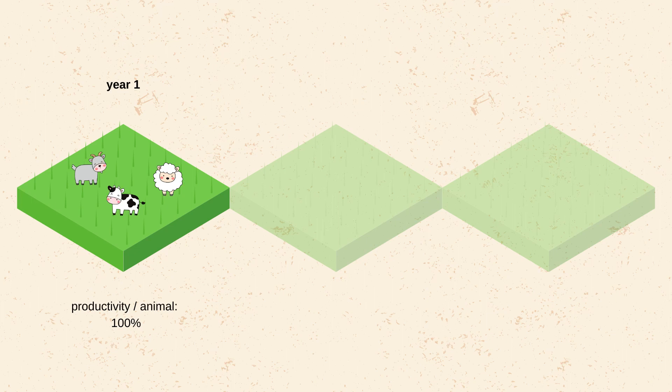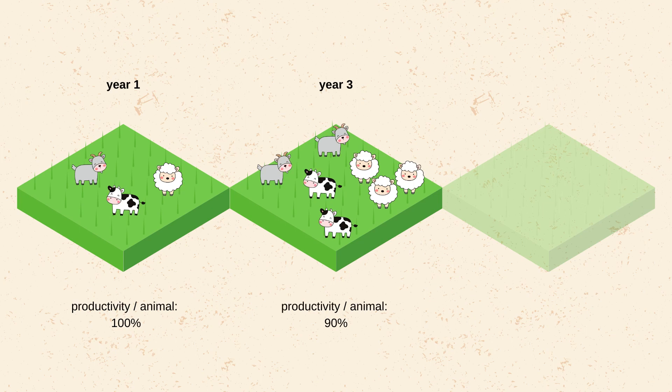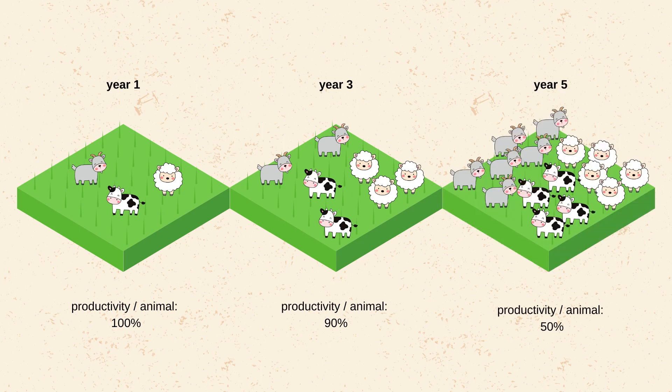To maximize the production of milk, they are thinking of adding more and more animals. At first, it seems beneficial for each herdsman, up until a tipping point, where the productivity of those animals starts to decline.